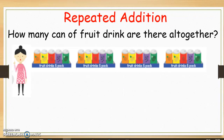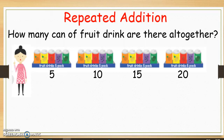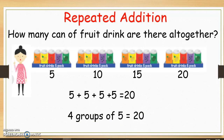Now let's help Ruby count the fruit drinks. How many cans of fruit drink are there all together? Ruby has put the fruit drinks in equal groups. There are five cans in each group, so we can count in groups of five to find the answer. Can you help me? Five, ten, fifteen, twenty. There are twenty cans of fruit drink all together. We can write a number sentence to show this: five plus five plus five plus five equals twenty. Or we could say that four groups of five makes twenty.